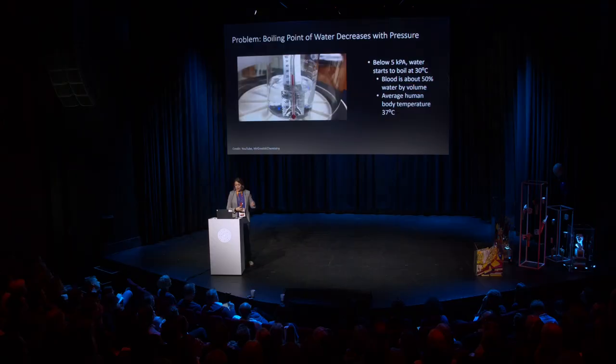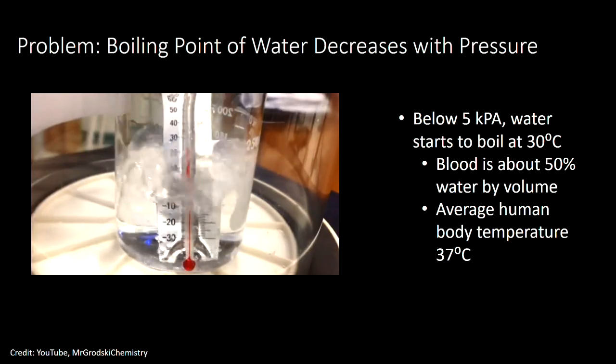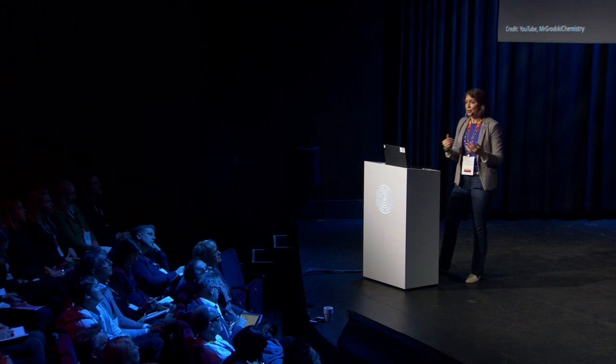The other big problem with vacuum is that the boiling point of water decreases with pressure. When you are at about vacuum, the boiling point of water is around 97 degrees Fahrenheit, which coincidentally is right around human body temperature. So the water in your body, in your blood, starts to be a problem. We have to make sure that our spacesuit provides all that necessary atmosphere around the body.